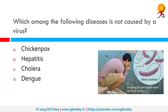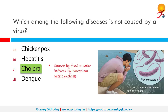Which among the following diseases is not caused by a virus? The correct answer is cholera. Cholera is an infectious disease that causes severe watery diarrhea, which can lead to dehydration and even death if untreated. It is caused by eating food or drinking water contaminated with a bacterium called Vibrio cholerae.